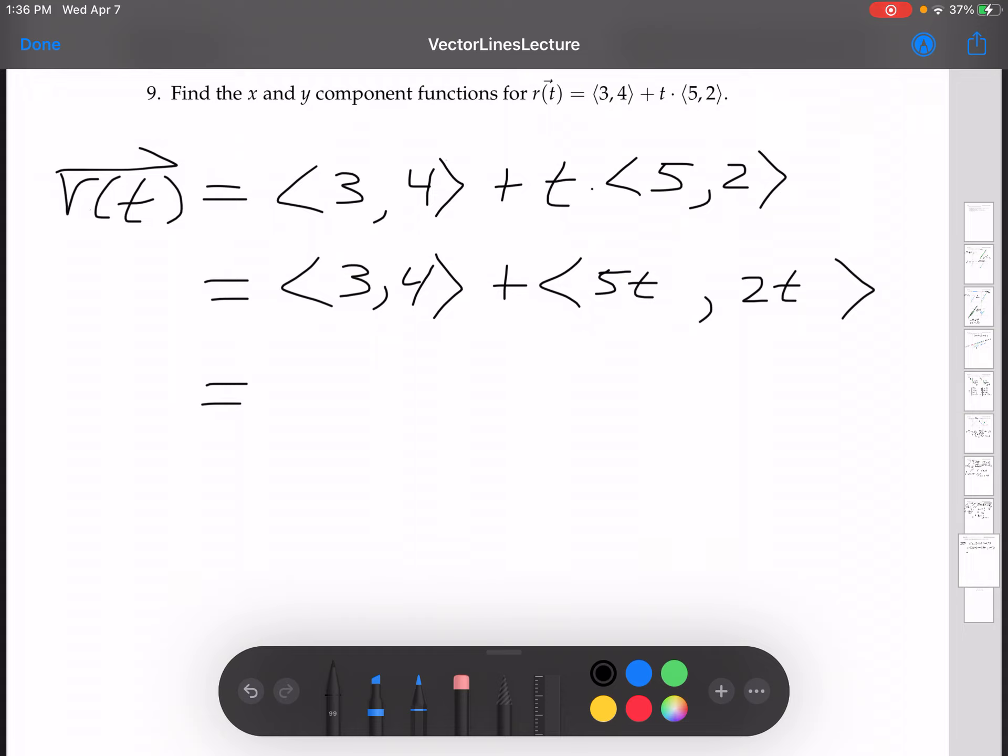Now, using vector addition, we can write this as 3 plus 5t and 4 plus 2t.